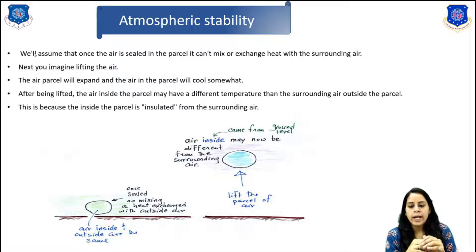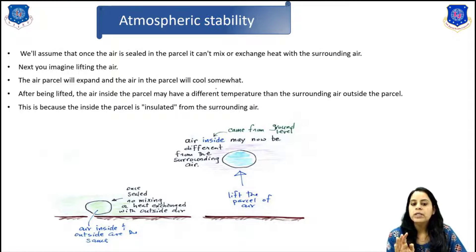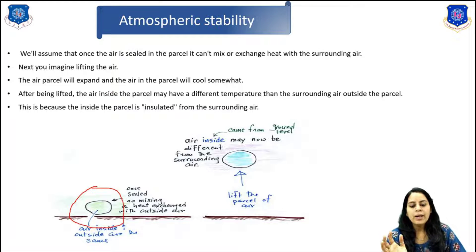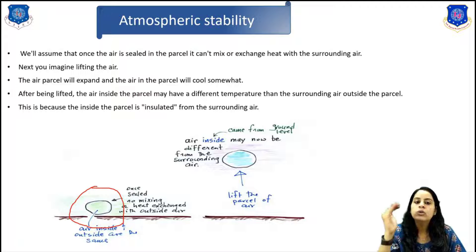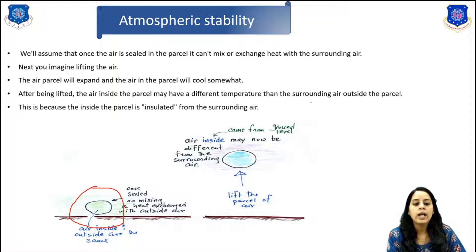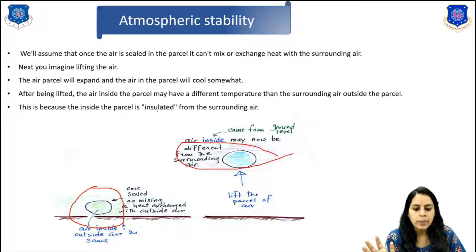We assume that once the air is sealed in the parcel, it cannot mix or exchange heat with the surrounding air. Then we imagine lifting the air parcel — the air parcel will expand and the air in the parcel will cool somewhat. After being lifted, the air inside the parcel has a different temperature than the surrounding air outside the parcel. This is because the inside of the air parcel is insulated from the surrounding air.